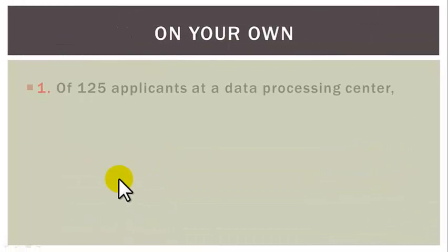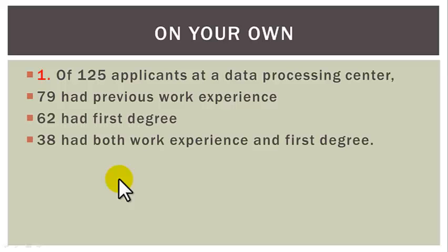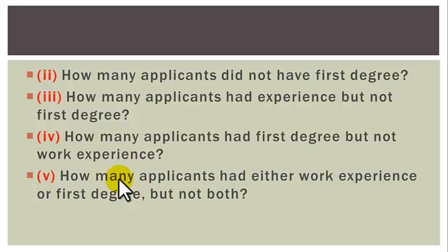Practice Problem 1: Of 125 applicants at a data processing center, 79 had previous work experience, 62 had a first degree, and 38 had both. Find: (1) How many did not have work experience? (2) How many did not have a first degree? (3) How many had experience but not a first degree? (4) How many had a first degree but not work experience? (5) How many had either but not both?